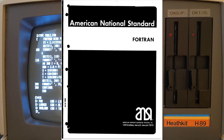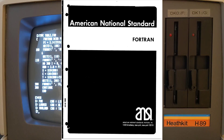Successive versions added support for a character data type in Fortran 77, structured programming, array programming, modular programming, and generic programming in Fortran 90, parallel computing in Fortran 95, object-oriented programming in Fortran 2003, and concurrent programming in Fortran 2008. The most recent Fortran standards include Fortran 2018 and Fortran 2023.